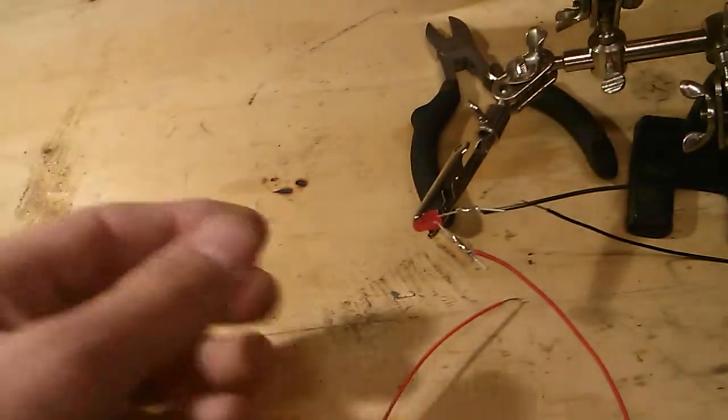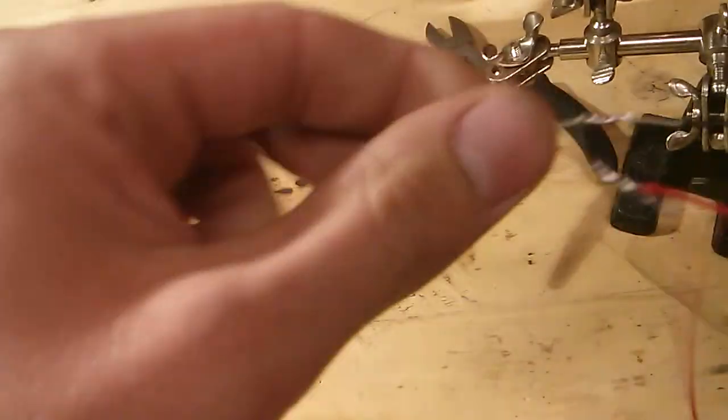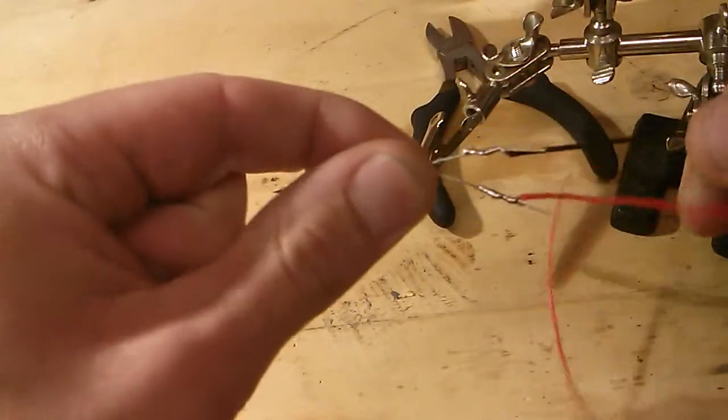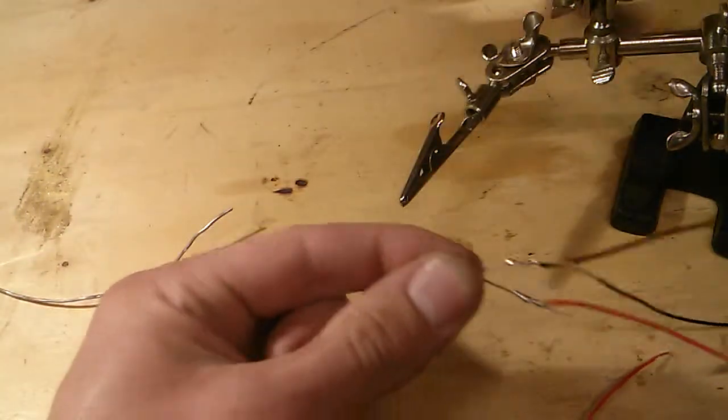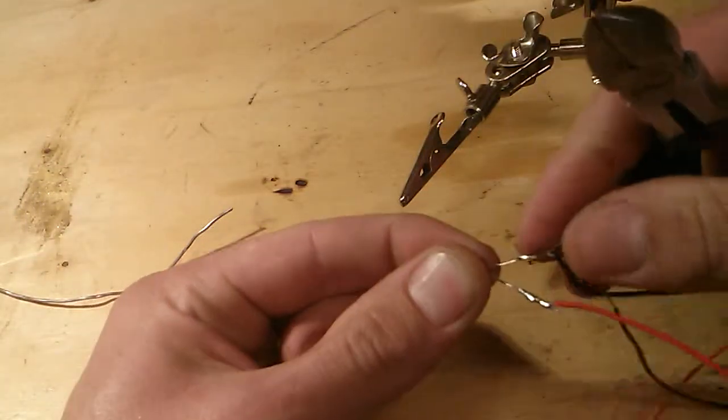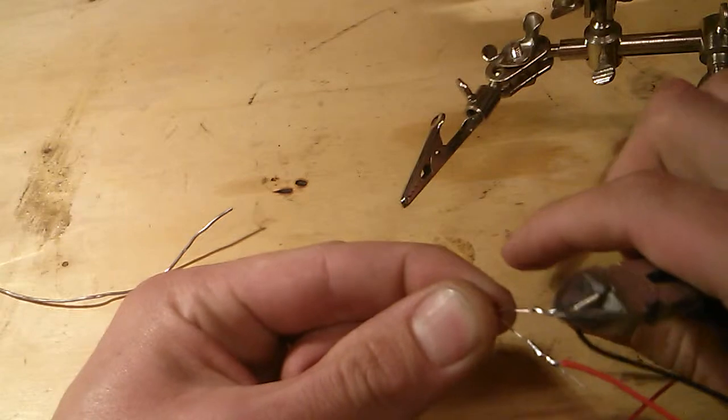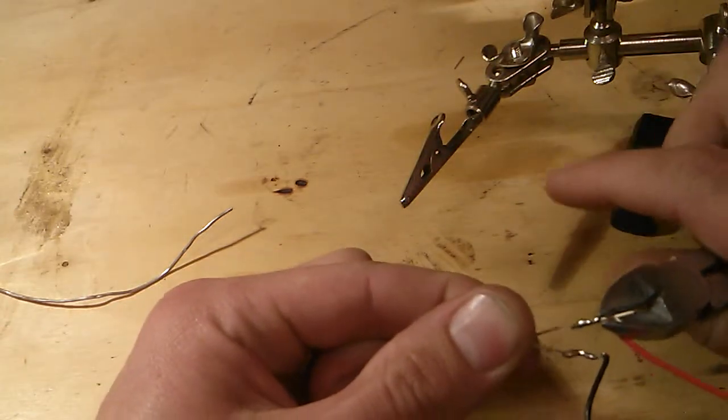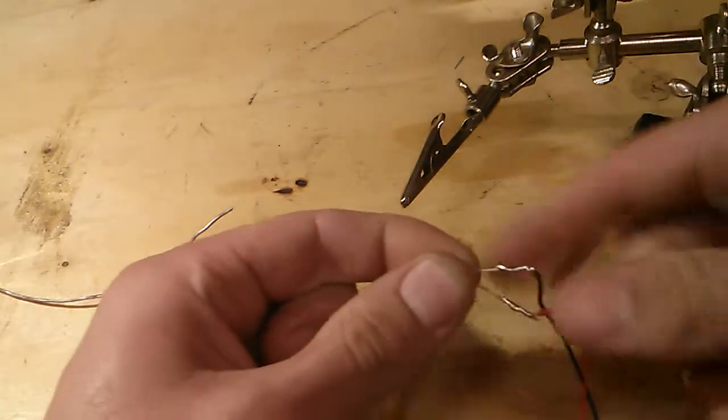You don't need too much solder, just enough that if you tug on it, you can see it's clearly stuck. Next step. Take your wire cutters and trim off the excess metal like so. There we go.